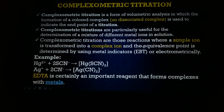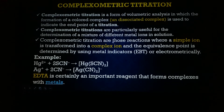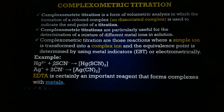We mostly use complexometric titrations for determination of metal ions in solution because metals easily form complexes with other reagents. In these reactions, a simple ion is transferred into a colored, undissociated complex ion, and the equivalence point is determined using metal indicators such as Eriochrome Black T, or determined electrometrically. For example, mercuric ion reacts with thiocyanate to form mercury thiocyanate, and silver reacts with cyanide to form silver cyanide. EDTA (ethylenediaminetetraacetic acid) is an important reagent used as a titrant to determine metal ions.